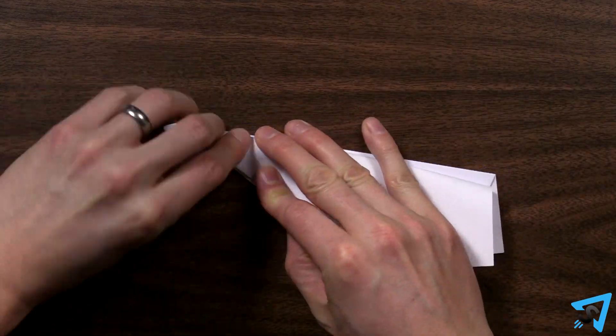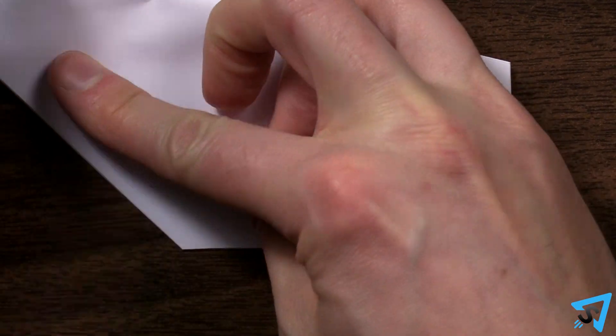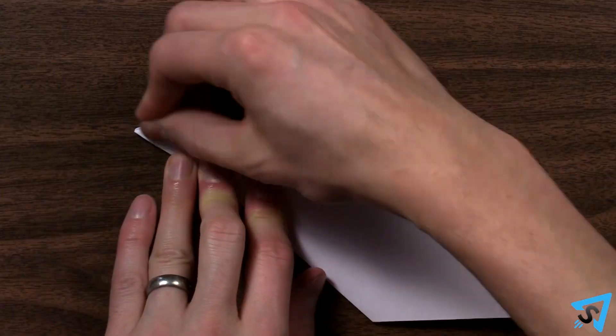Flip the plane over, and repeat this with the other wing, matching the height of the fold near the nose, and then lining up the wings. Sharpen the creases.